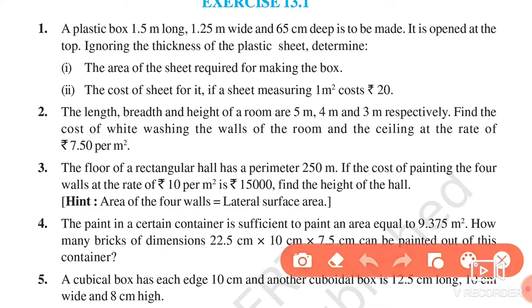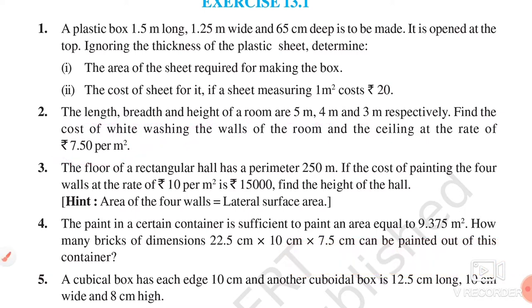Next we have to continue with question 2. The length, breadth, and height of a room are 5 meters, 4 meters, and 3 meters respectively. Find the cost of whitewashing the walls of the room and the ceiling at the rate of 7.5 rupees per meter square. First we have to find the area, and then we will find the cost.